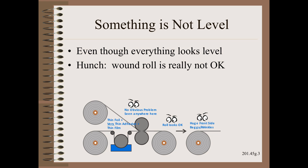That could be one of the three plies — note, we always count an adhesive as a ply. It can also be the laminating nip. Once we figure out which element is crooked, we can immediately proceed to brainstorming.